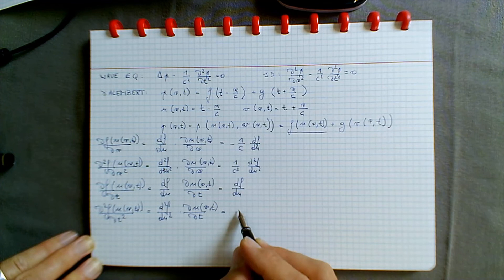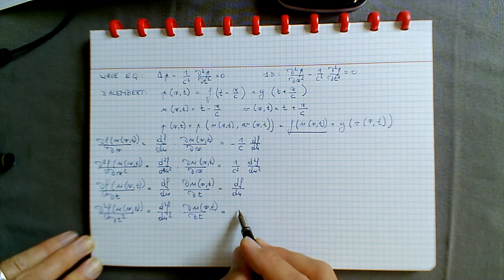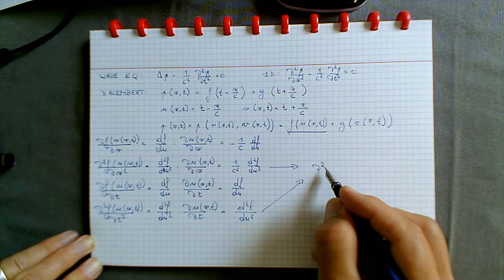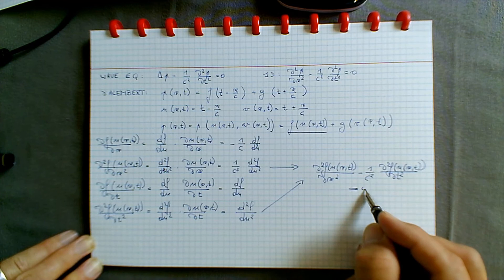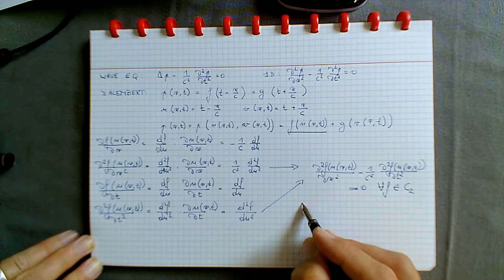Combining these two second derivatives, the one with respect to x and the one with respect to t, we indeed see that the second derivative of f with respect to x minus 1 over c squared times the second derivative of f with respect to time is equal to zero, for any sufficiently differentiable function f. The exact same result holds for g.